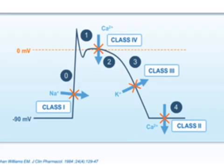The drug included in Class 1C is flecainide. Class 2 — you know very well — is beta blockers. They prevent beta receptor activation, which would normally increase cyclic AMP. There is a decrease in SA node and AV nodal activity, and a decrease in the slope of phase 4. The drugs included in this group are propranolol and esmolol.